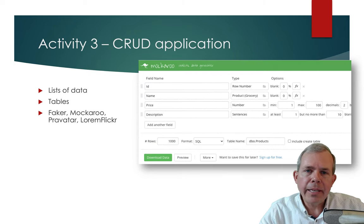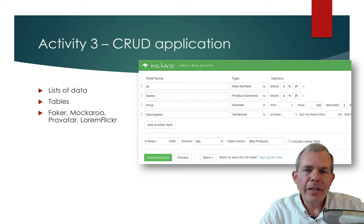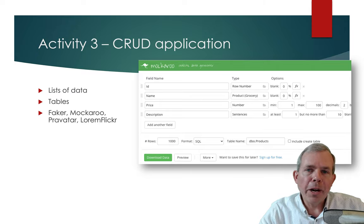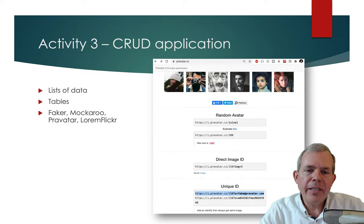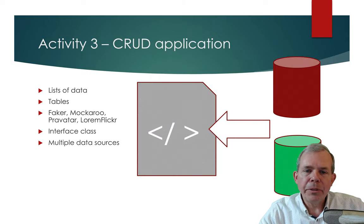We're also going to look at some tools beyond C# for generating fake or placeholder data. The first library is called Faker, the second is called Makaroo — a nice website for creating data. We'll also look at Pravatar, which generates thumbnails, and Lorem Flickr, which inserts pictures for your products — different ways to generate placeholder data.